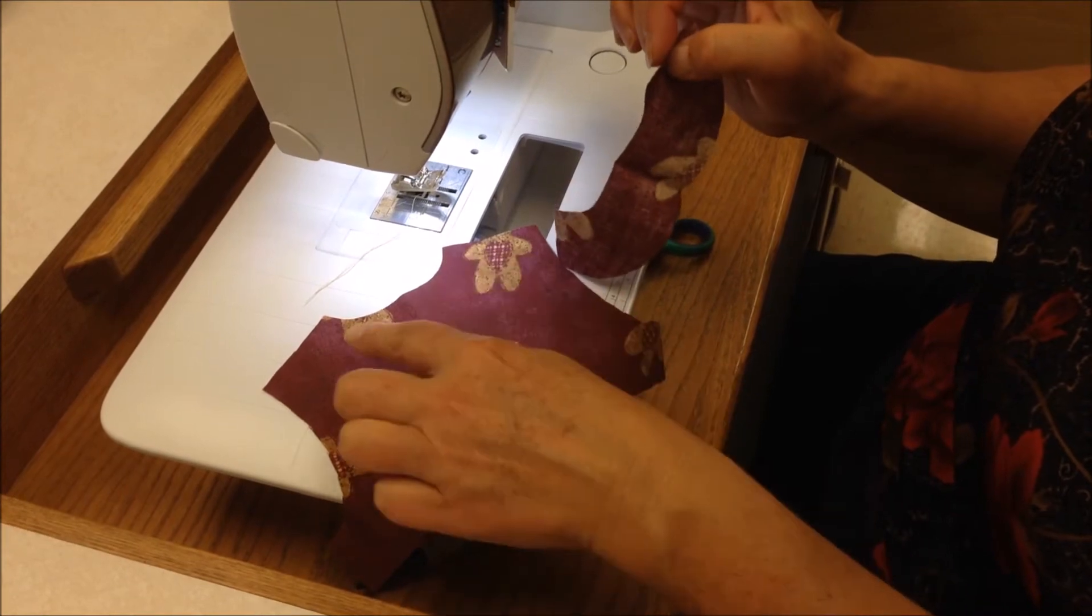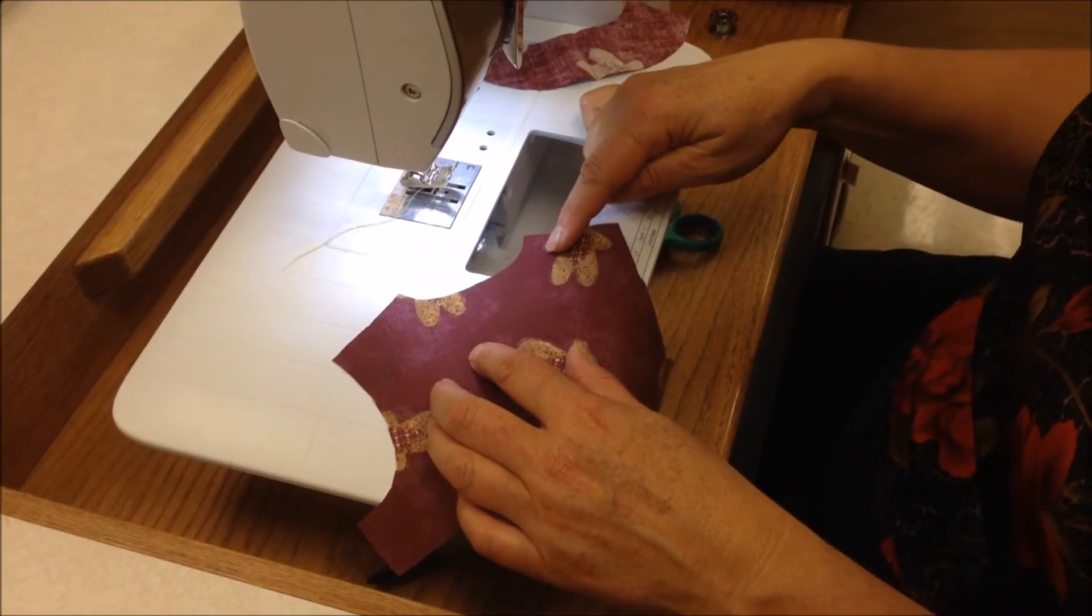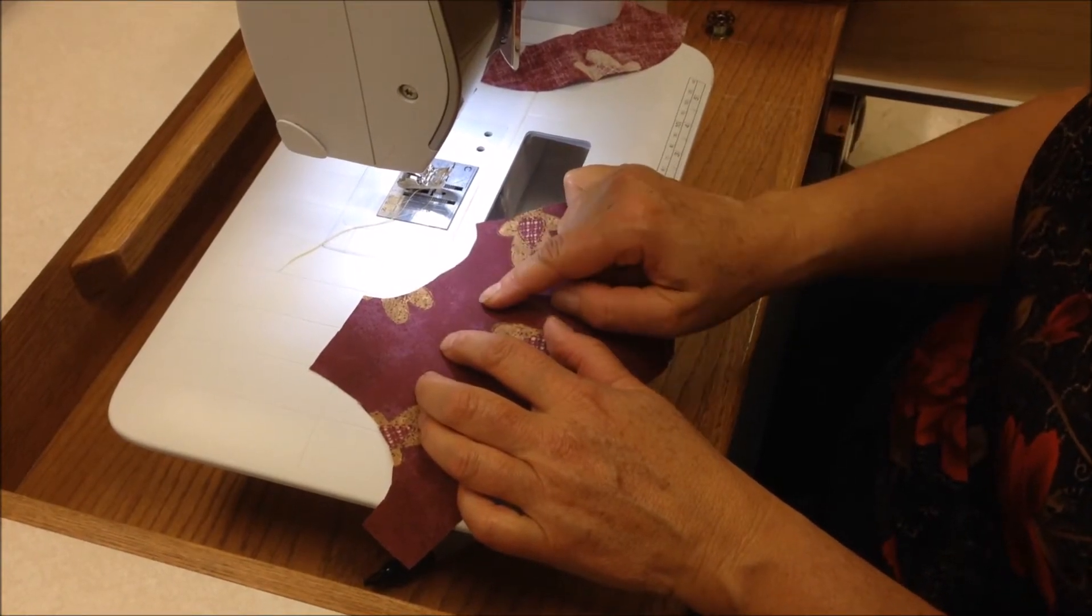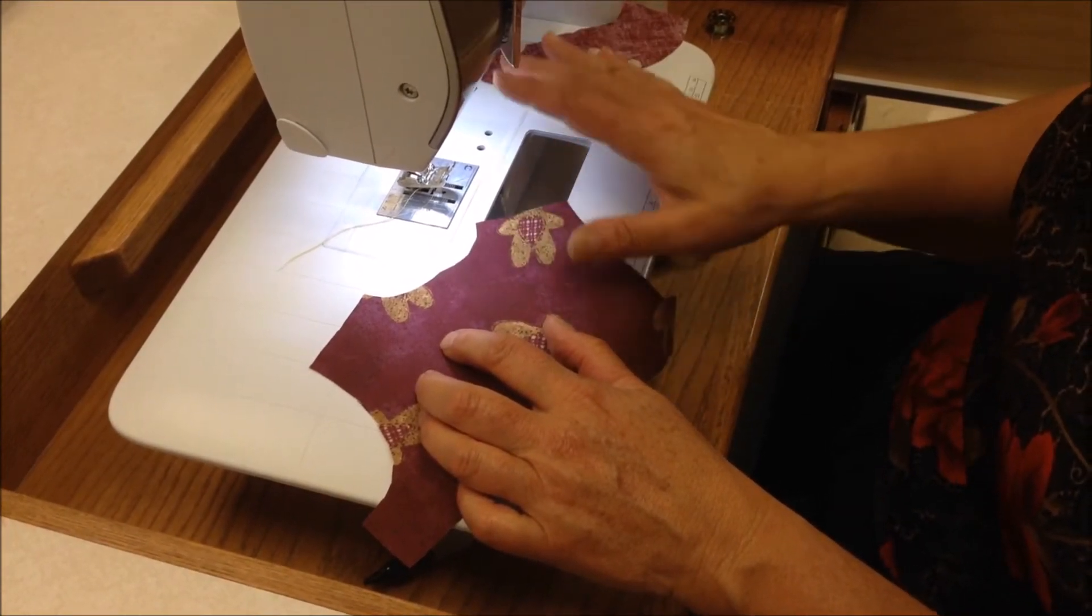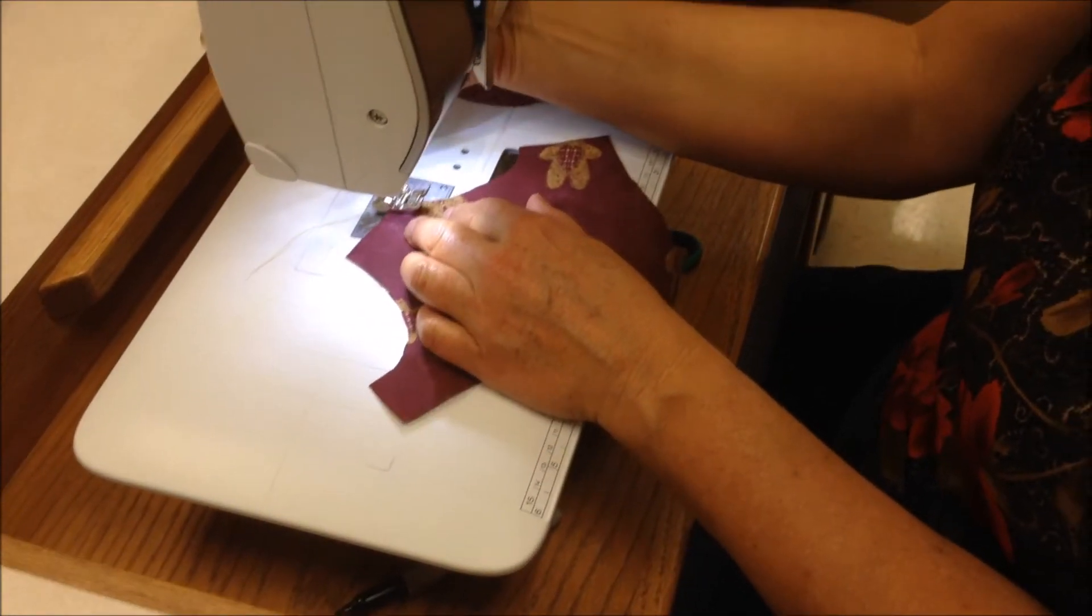We need to prep our concave curve, and we're going to do stay stitching here. If this was full scale, the stay stitching would be at a half inch, but since this is half scale, we're going to do the stay stitching at a quarter inch.